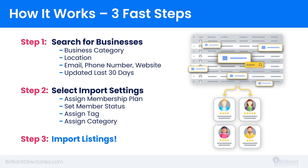Once you do that, you'll be presented with a number of business records matching your search criteria, and then you can select to import them. There are a few settings that go along with the import: you'll want to assign them to a membership plan on your website, set a status for whether these businesses will be active or inactive, you can assign a tag to keep better track of them in the admin area, and you can assign them a member category. After that, you just click the import button and it's all done.